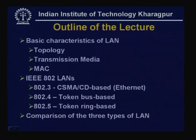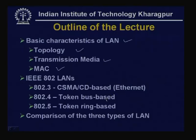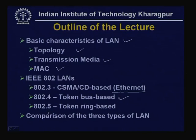First, I shall consider the basic characteristics of LANs, particularly the topology, transmission media, and medium access control. These are the three parameters which characterize a local area network. Then I shall discuss about the three standards developed by the IEEE 802 committee: IEEE 802.3, based on CSMA/CD, with the most popular version known as Ethernet; IEEE 802.4, based on token bus; and IEEE 802.5, which is token ring based. We shall discuss and compare the performance of these three types of LANs.